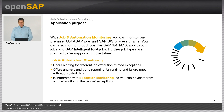Job and Automation Monitoring offers alerting for different job execution related exceptions. We also offer analysis and trend reporting for runtime and failure rates with aggregated data. It is integrated with exception monitoring so that you can navigate from a job execution to the related exceptions directly.